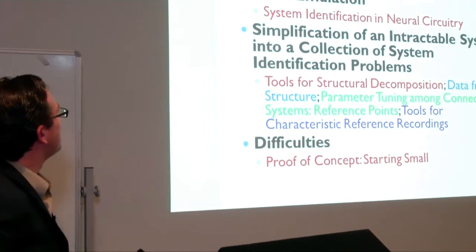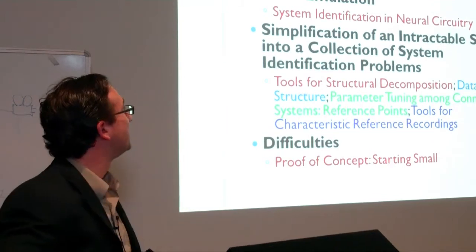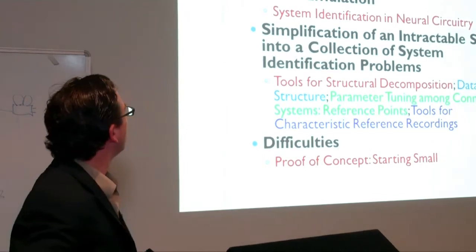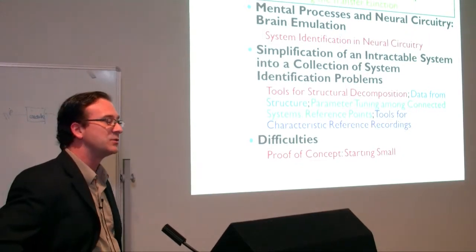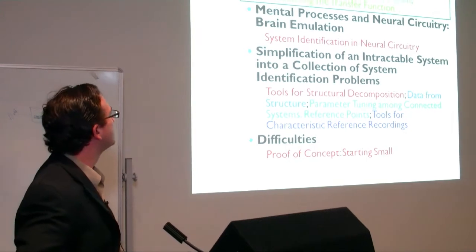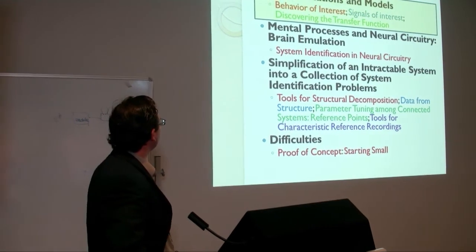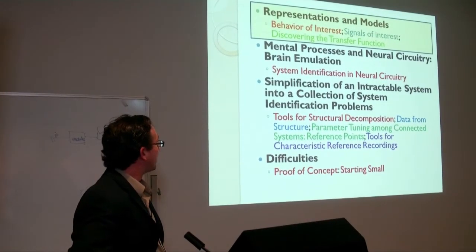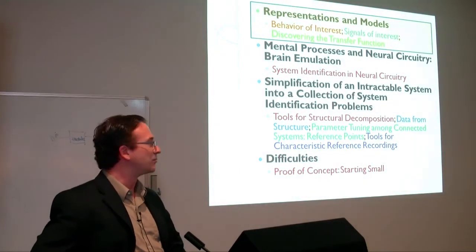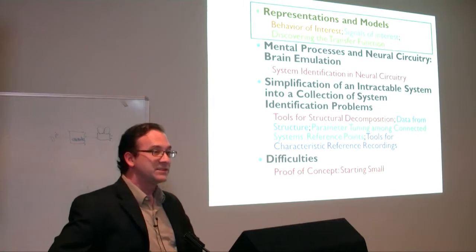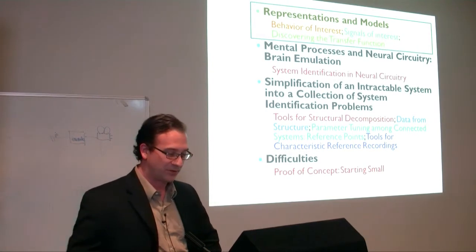I'll go through this in several steps. First, representations and models in general — where does system identification come in? Then mental processes and neural circuitry — how do you apply this to neurons? Then simplification, to make this tractable. And finally, the difficulties — there are a whole slew of them. My main reason for giving this talk is to see if people have ideas and maybe someone will help me with all these difficulties.